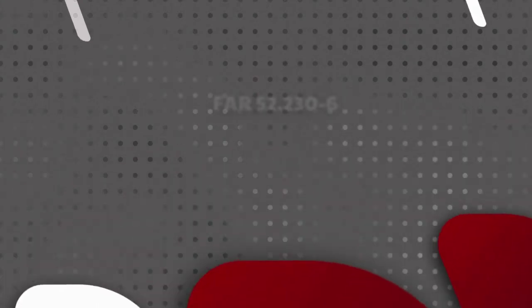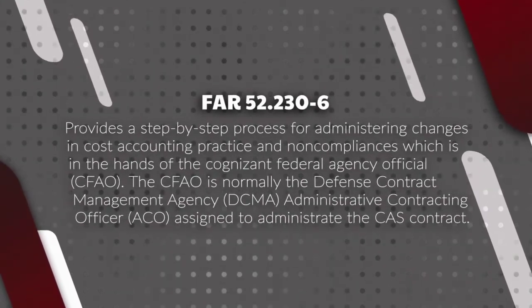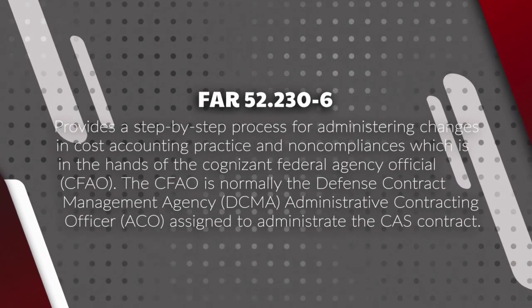FAR 52.230-6 provides a step-by-step process for administering changes in cost accounting practice and non-compliances, which is handled mainly by your cognizant federal agency official, or CFAO. The CFAO is normally the ACO within the Defense Contract Management Agency who is assigned to administer your CAS-covered contracts.